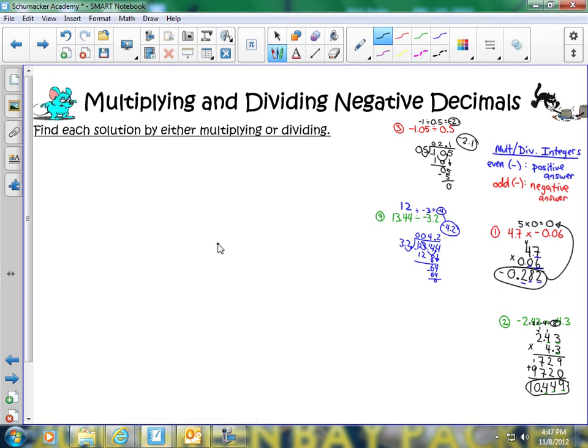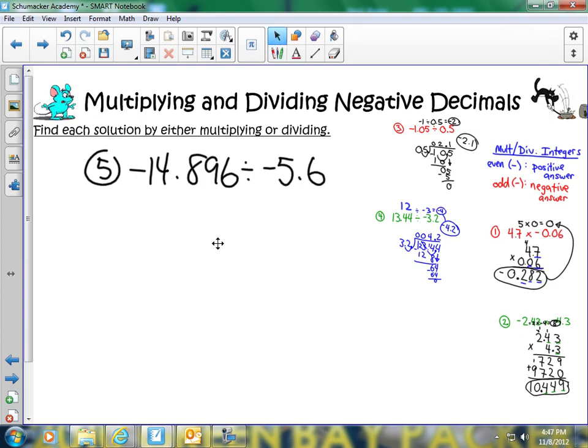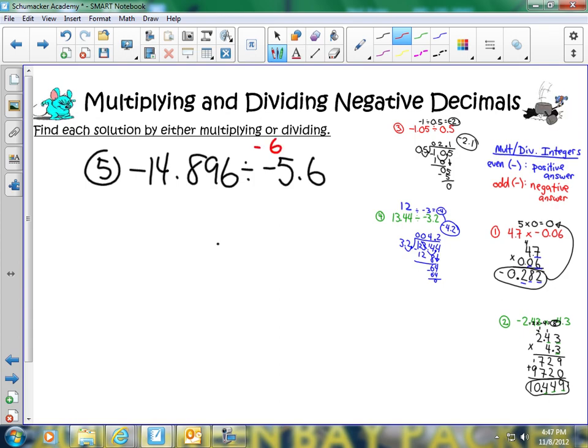We have number 5. We have negative 14.896 divided by negative 5.6. We're going to go ahead and make this negative 5.6 into negative 6. Nearest integer divided by, well, the negative 14.89, I'm going to go ahead and make that into a negative 12. It's pretty close. Negative 12 divided by negative 6 is going to be a positive 2. My answer should be close to positive 2.